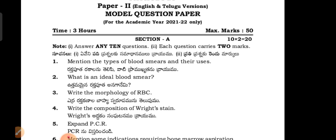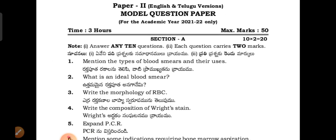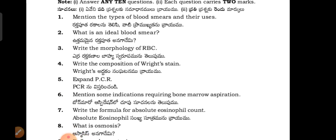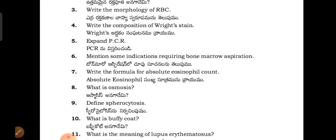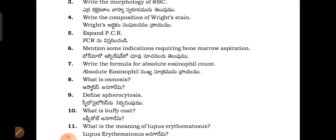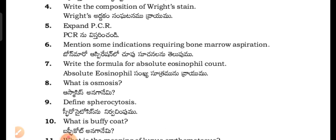The third paper is Pathology. The questions include: Mention the types of blood smears and their uses. What is an ideal blood smear? Write the morphology of RBC. Write the composition of RBC. Expand PCR — Polymerase Chain Reaction test.